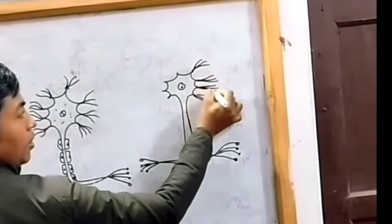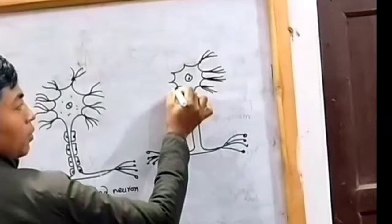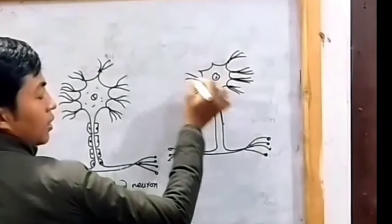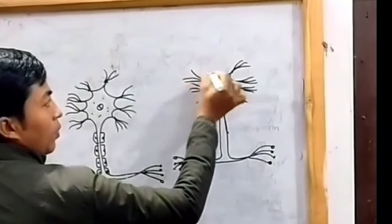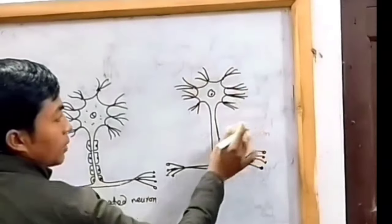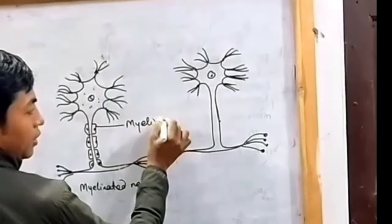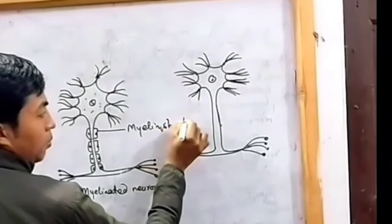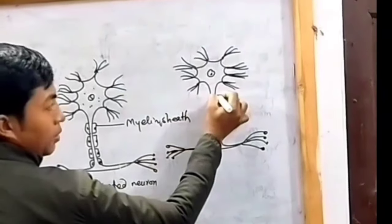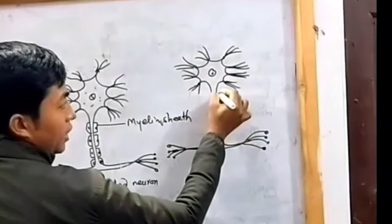All the sheaths are seen on the normal neuron, but in non-myelinated neurons, the myelin sheath is only present at some points, or absent in case of non-myelinated neurons.